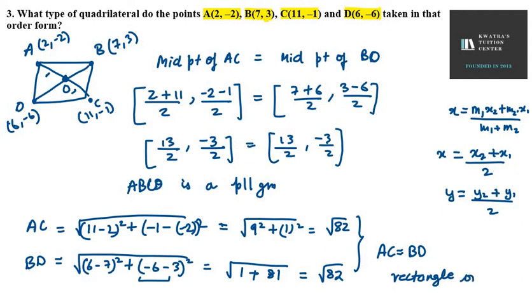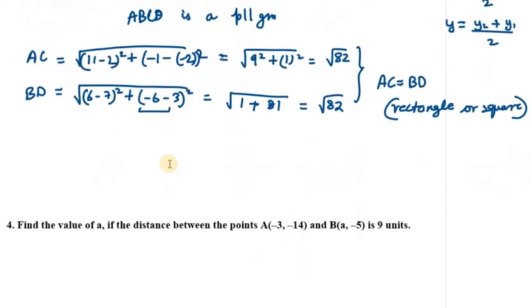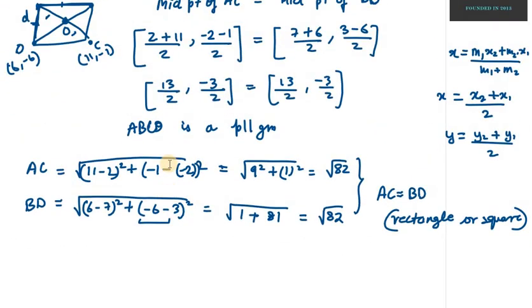To differentiate between rectangle and square, you should know if the adjacent sides are equal or not. Let's find the distance between AD and AB to check whether it is rectangle or square. Let's check for the adjacent sides AD and AB.